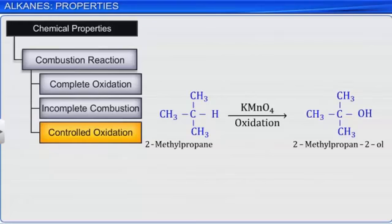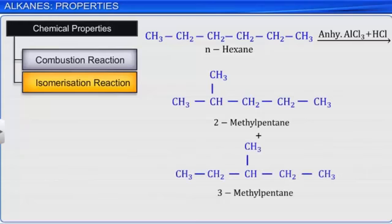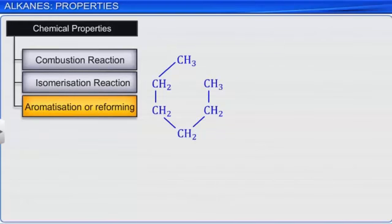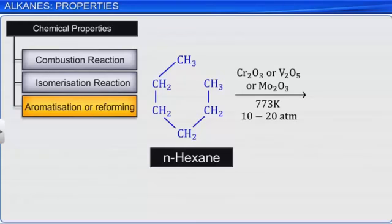When a normal alkane like n-hexane is heated in the presence of anhydrous aluminum chloride and hydrogen chloride gas, it isomerizes to a branched chain alkane like 2-methylpentane and 3-methylpentane. Alkanes also undergo aromatization or reforming. A normal alkane with 6 or more carbon atoms like n-hexane, when heated to 773 K at 10-20 atmospheric pressure in the presence of catalysts like oxides of vanadium, molybdenum, or chromium supported over alumina, gets dehydrogenated to form cyclic compounds like benzene or its homologues.